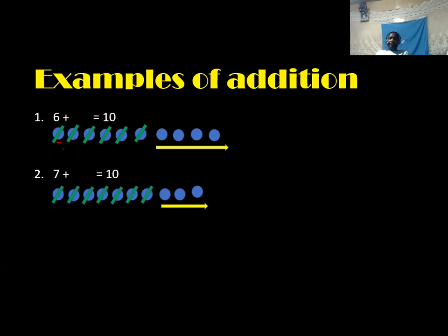Take away six balls: one, two, three, four, five, six. Pupils, how many balls are remaining? One, two, three, four. Go back to question one: six plus the unknown number. The unknown number is four. Six plus four equals ten.